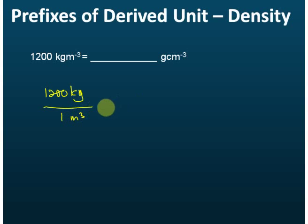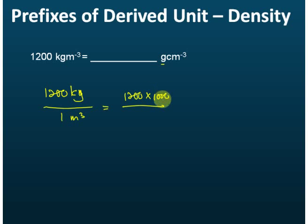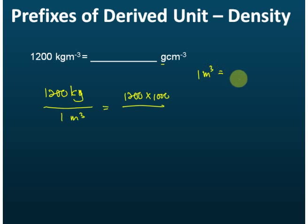We are asked to convert kg to grams and meter cubed to cm cubed. To convert kg to grams, we multiply by one thousand. For the volume unit, if you remember, one meter cubed is equal to how many cm cubed? One meter cubed equals one million cm cubed.